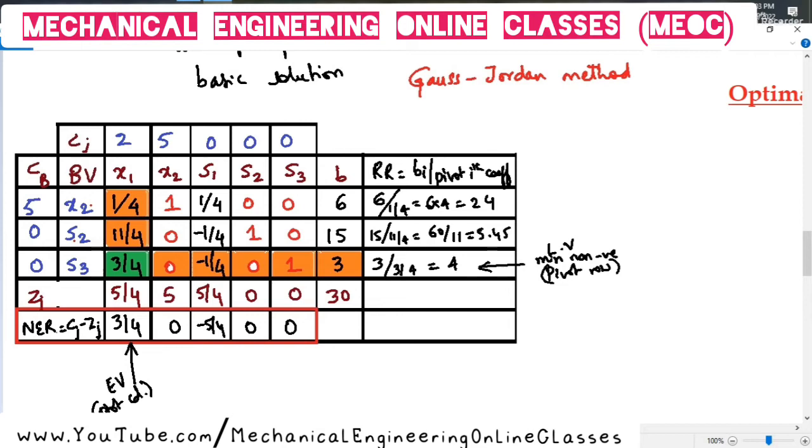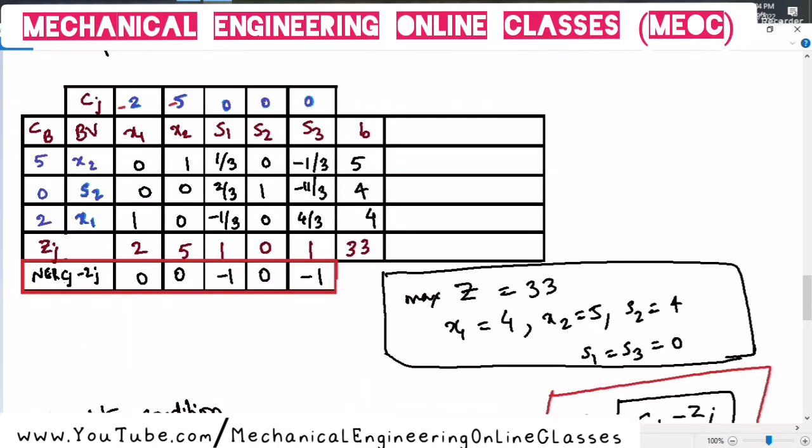This condition guarantees that only improved solutions can be obtained through this optimality principle. So, if NER is all zeros or negatives for a max type of problem like here, then it means that we cannot further improve our solution anymore. So, that is the meaning that the optimal solution is attained.